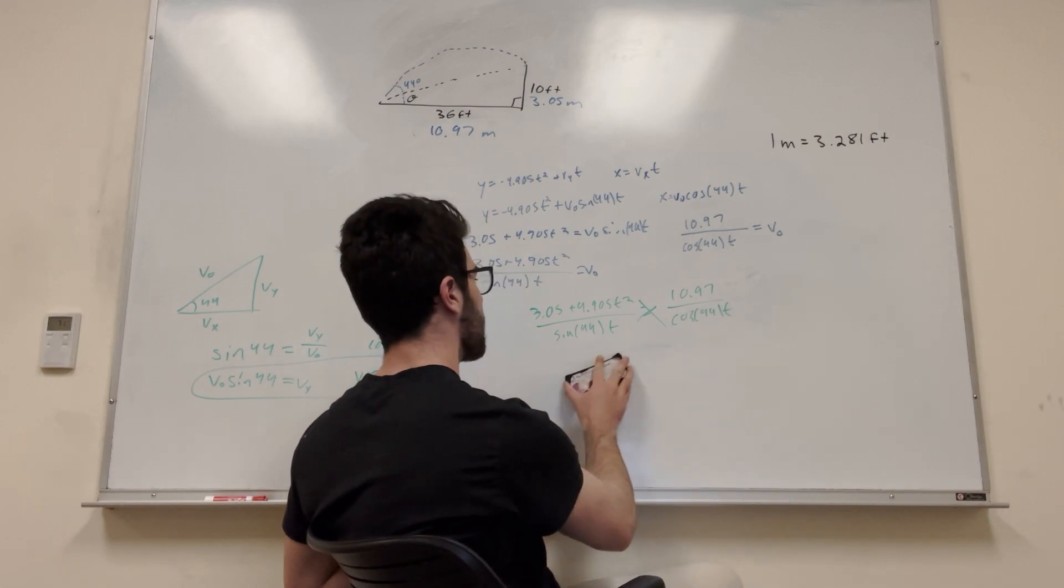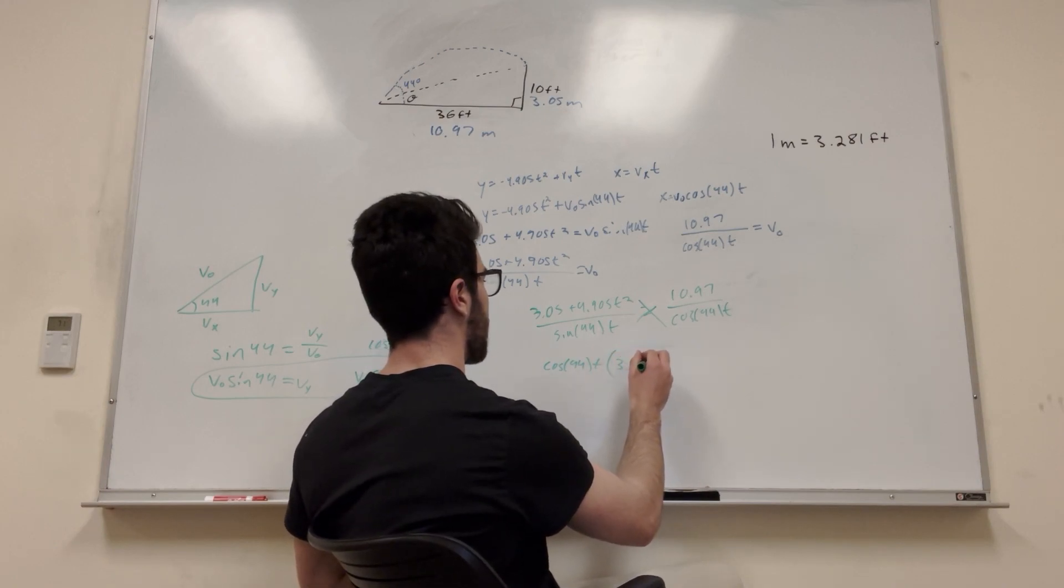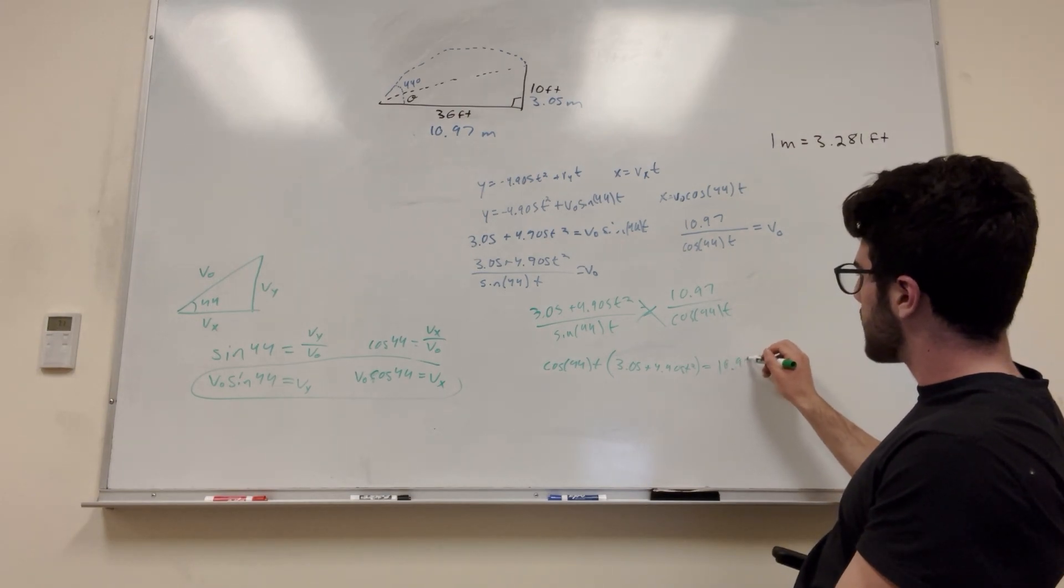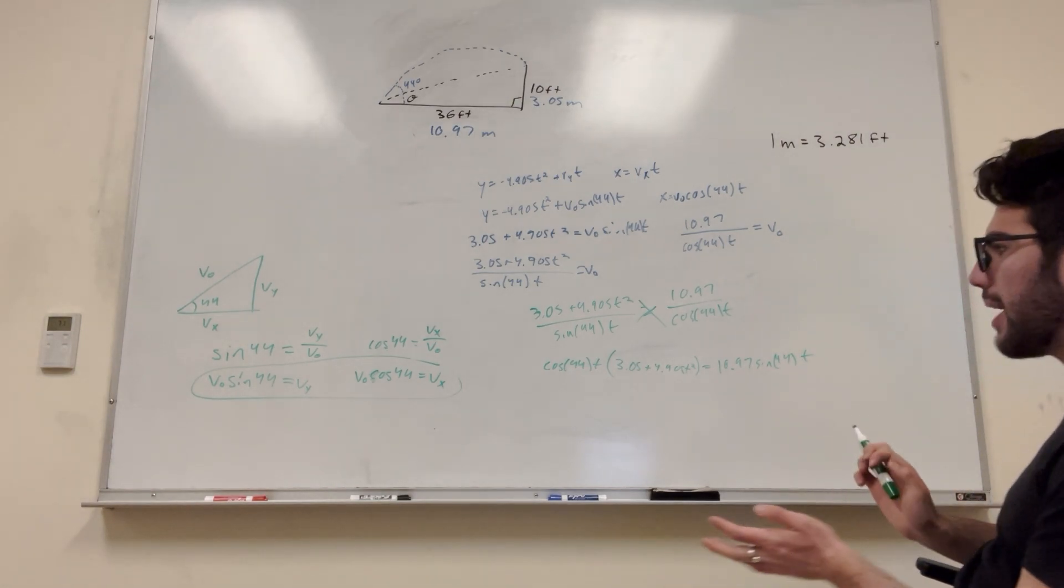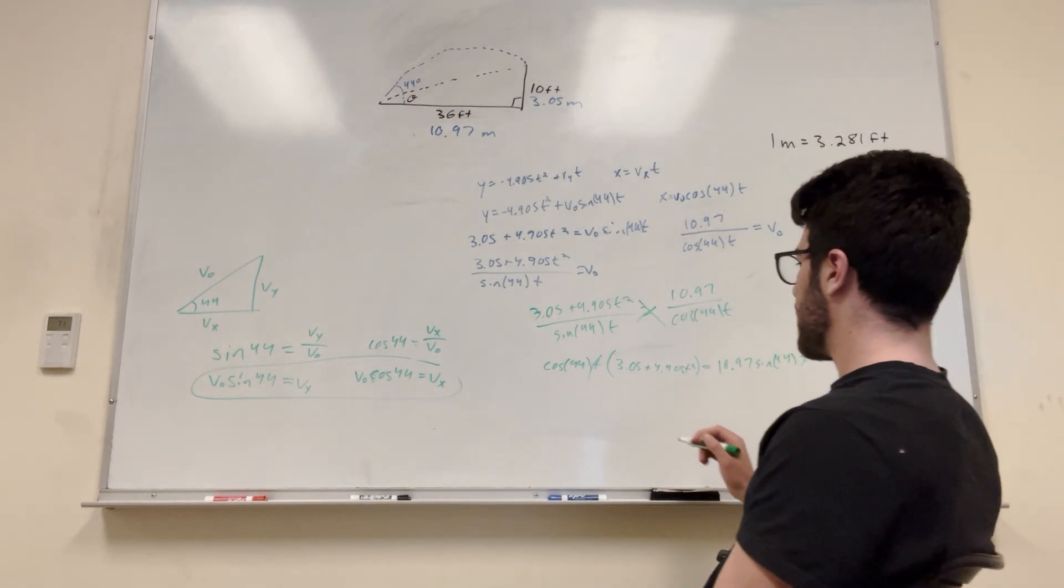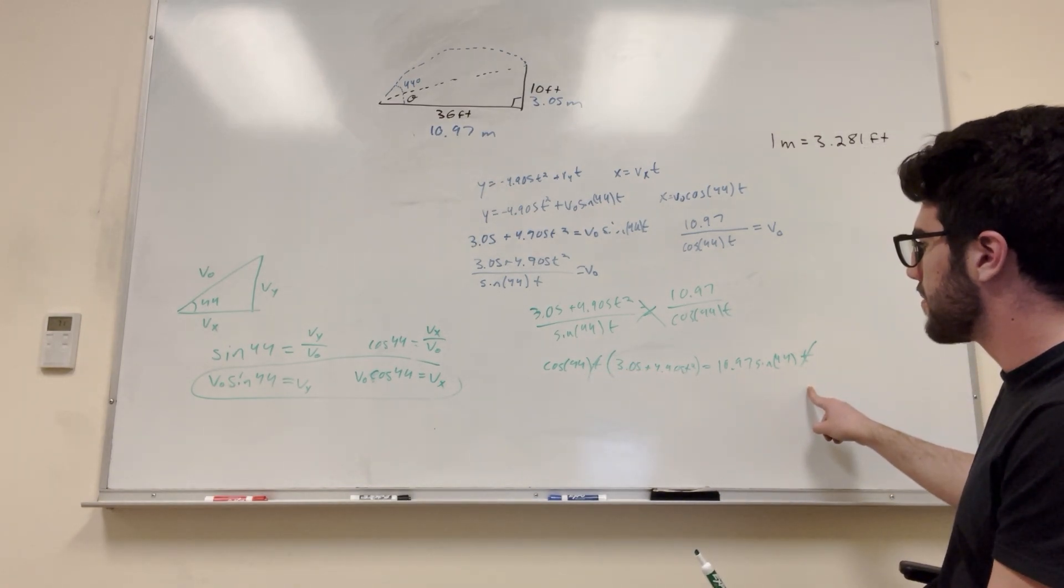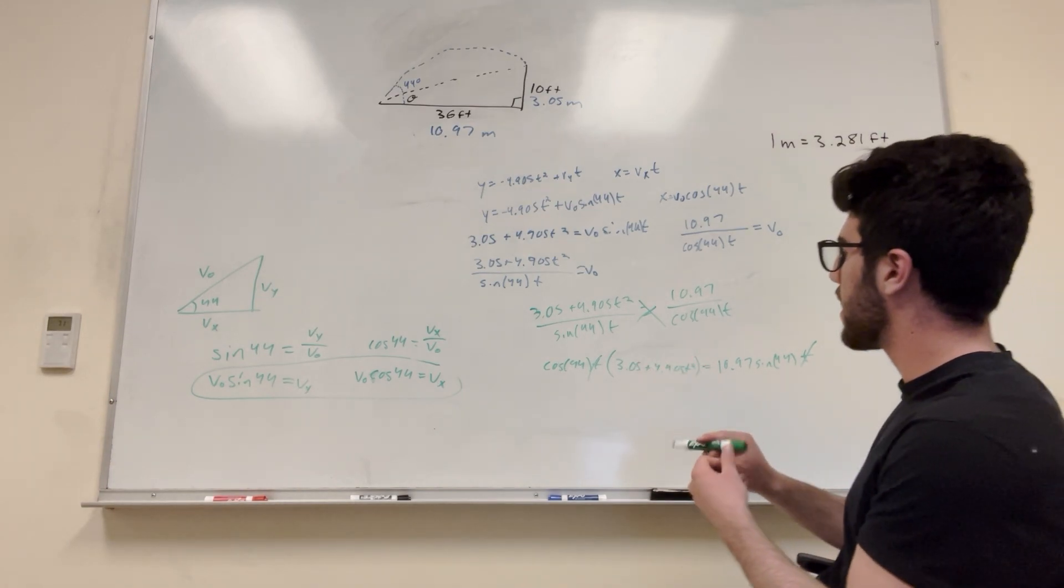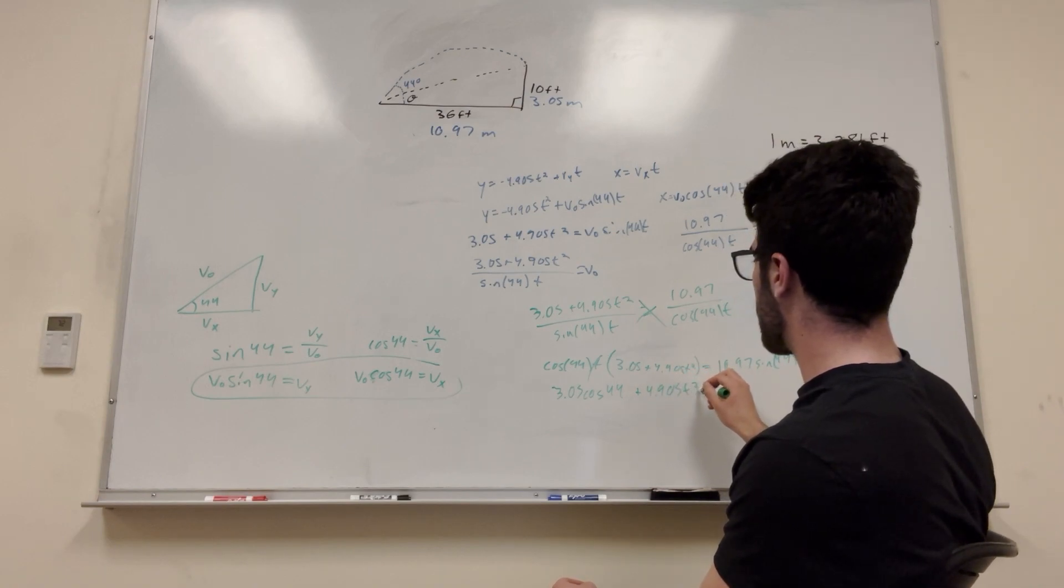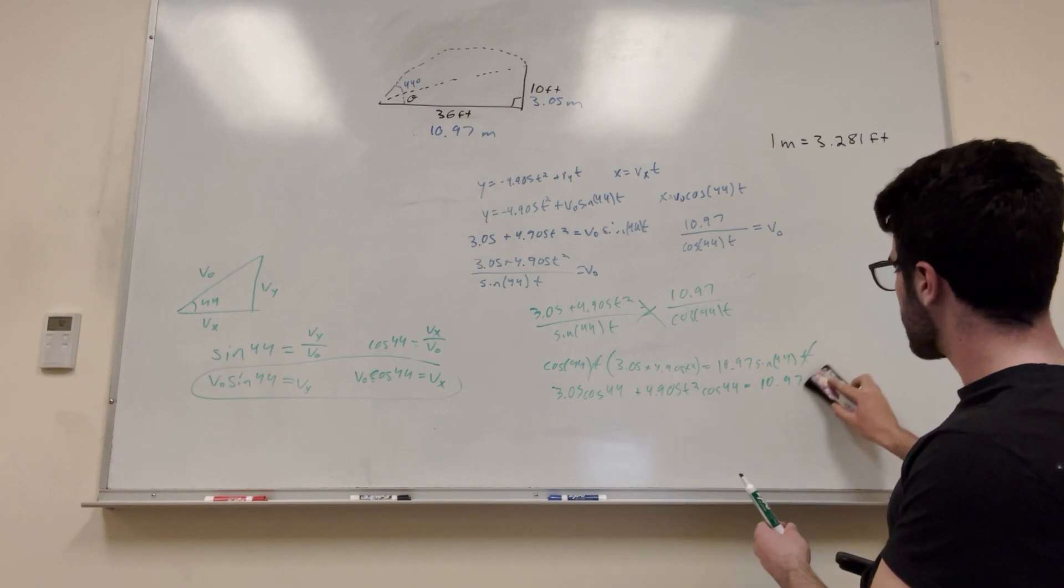So what comes next is just a lot of nasty simplification. But we can do it. So let's expand it. 3.05 cosine 44 plus 4.905 T squared cosine 44 equals 10.97 sine of 44. Now we have to subtract cosine by both sides.